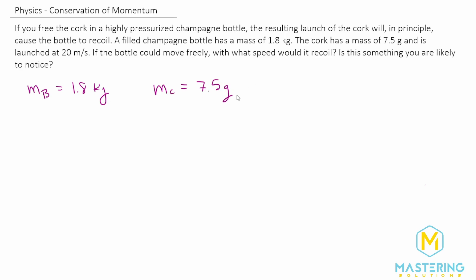which of course is not in SI units. There's 1,000 grams in a kilogram, so we'll divide this by 1,000 and we will move the decimal place over 3, which will give us 0.0075 kilograms.